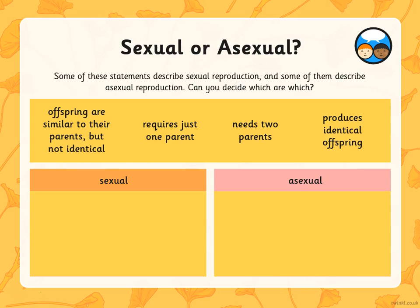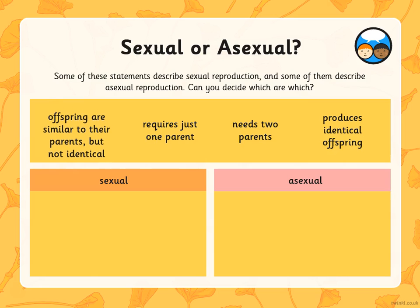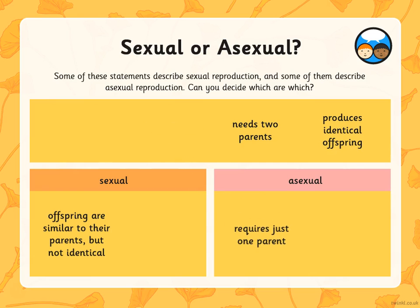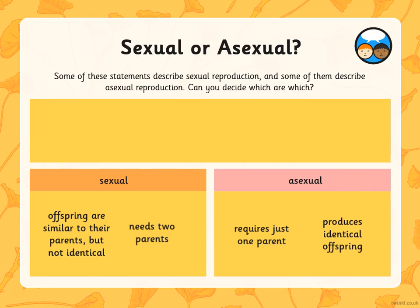Let's consider whether something is sexual or asexual reproduction. Some of these statements describe sexual reproduction and some describe asexual reproduction. Can you decide which are which? Pause the video, read the four different statements, and decide which category they fit into. Hopefully you've had a chance to look at those statements — let's see if you were right. Offspring that are similar to their parents but not identical describes sexual reproduction. Asexual reproduction requires just one parent, whereas sexual reproduction needs two parents. Asexual reproduction produces identical offspring.